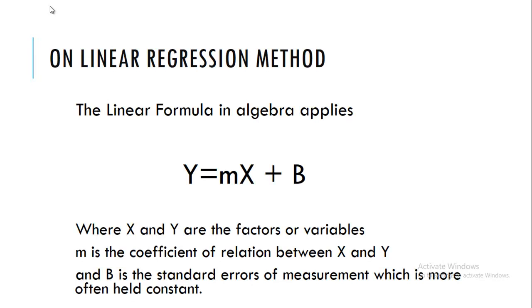One thing mentioned is the correlation coefficient. Correlation is usable only in studies that use the linear regression method. Therefore, studies should be continuous and laboratory-based so that certain factors can be controlled. The linear regression formula in algebra applies: y = mx + b, where x and y are the factors or variables under study, m is the coefficient of relation between x and y, and b is the standard error of measurement, which is more often held constant.